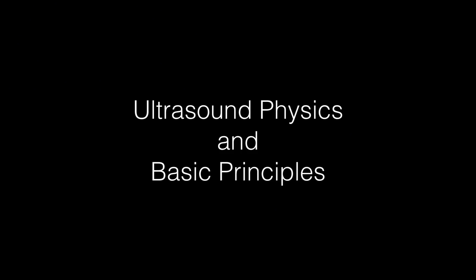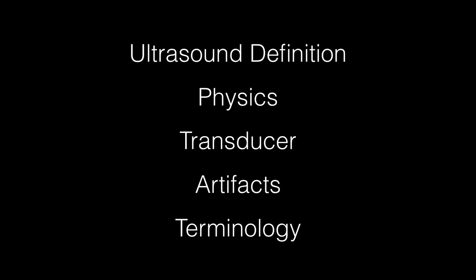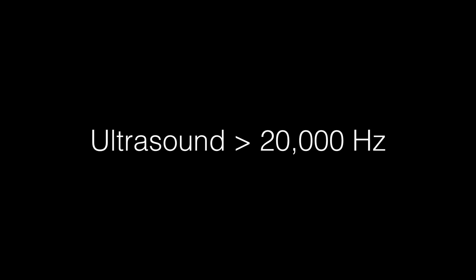We're going to discuss ultrasound physics and some basic principles. We'll be reviewing the definition of ultrasound, a little bit about physics, transducers, artifacts, and some basic terminology you need to be aware of. Ultrasound is a mechanical pressure wave, as all sound is, and it's measured in cycles per second denoted by the unit hertz. Audible sound — that which we can hear — is 20 to 20,000 hertz. Ultrasound is anything above the 20,000 hertz range.